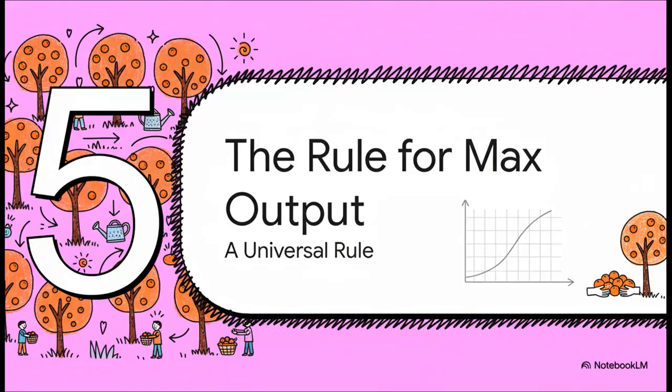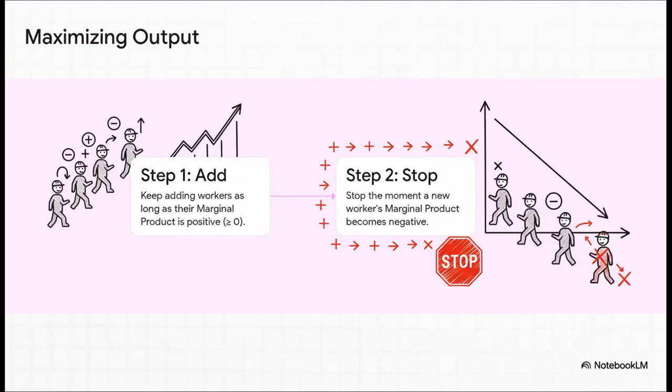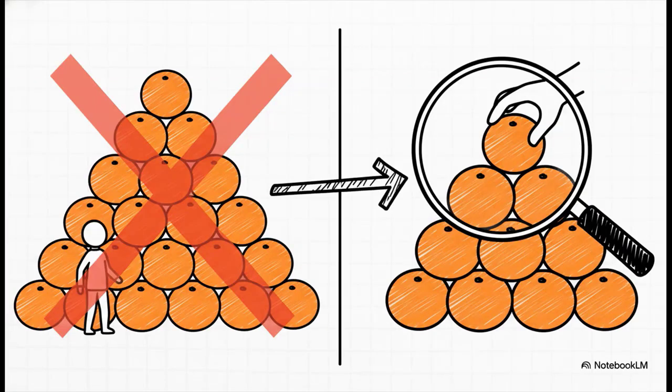What we've discovered in this orange grove isn't just about picking fruit. It's a universal rule for maximizing output anytime you're adding resources to pretty much anything. Here's the rule boiled down to two simple steps. Step one: keep adding resources, whether it's workers, ingredients, or features, as long as their marginal product is positive, even if it's just one orange. Step two: the moment the marginal product turns negative, you stop. That's your signal that you've gone too far. And that's the crucial insight. It's a little counterintuitive, but if you want to maximize the total, you have to stop looking at the total. Instead, you have to focus on the margin, the contribution of that very next addition.